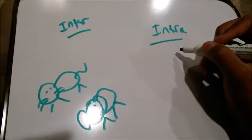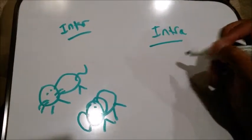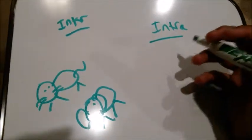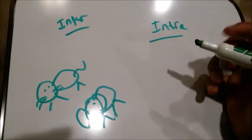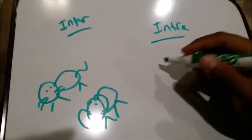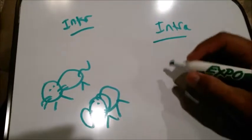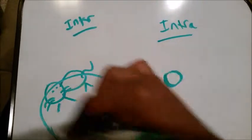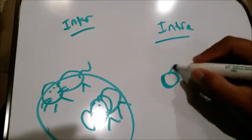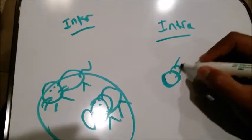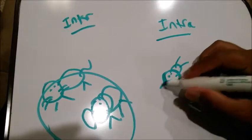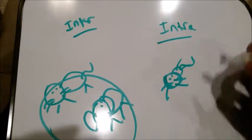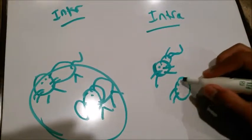Intra-specific competition is when species of the same kind compete with one another in the ecosystem. So basically, you're going to have a bunch of cats competing against each other.